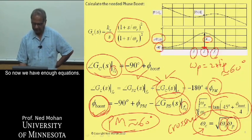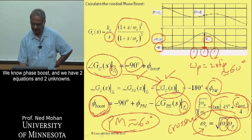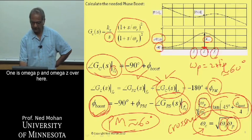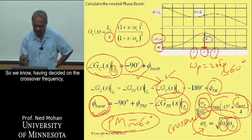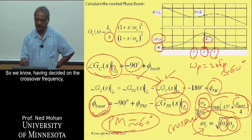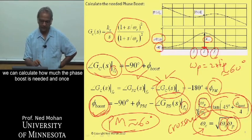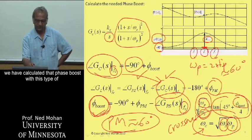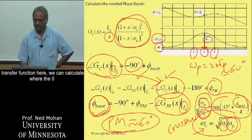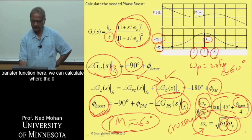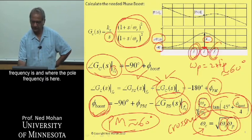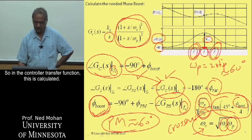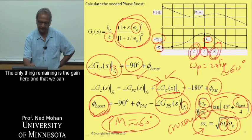Now we have enough equations. We know phi boost, and we have two equations and two unknowns: omega P and omega Z. Having decided on the crossover frequency, we can calculate the required phase boost, and from that we can calculate where the zero frequency and pole frequency should be in the controller transfer function.